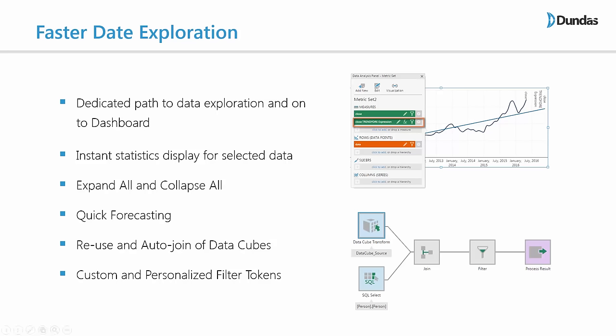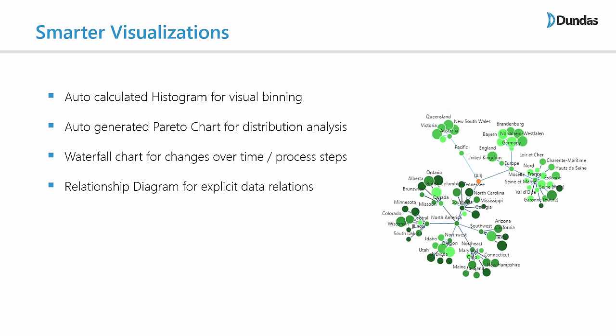Moving on, what I want to talk about next is smarter visualizations. In our continuous effort to provide advanced new ways to visualize data, we have now added new smart visualizations. They're called smart visualizations because they will actually generate or calculate the required data to plot those visuals without forcing you to prepare your information upfront or massage it in the structure required for those visualizations. This includes new charts such as histograms, waterfall charts, or faster ways to create Pareto charts, but also a unique relationship diagram that allows you to visualize big or complex data relations.